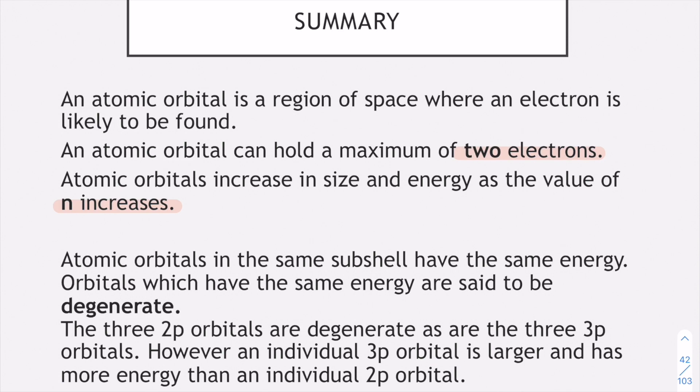Now we're moving on to something called degenerate. What that means is the orbitals have the same energy. You could have three 2p orbitals. They are degenerate because they have the same energy, as are three 3p orbitals. However an individual 3p and an individual 2p are not degenerate because your 3p orbital is slightly bigger and has more energy than your 2p orbital.